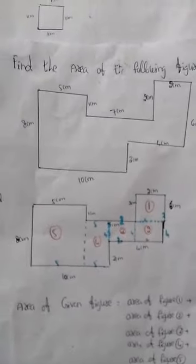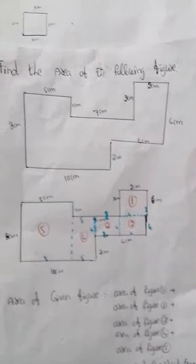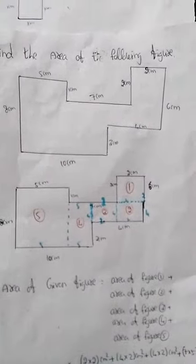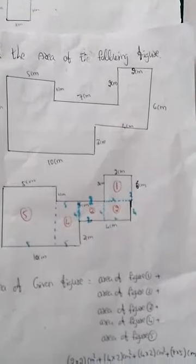One more problem here. See this figure — asking to find the area of this figure. Find the area of the following figure. See the figure how it is in your textbook. This figure is from the chapter on perimeter and area of squares and rectangles. See the figure and understand. This figure is given and asking us to find the area.